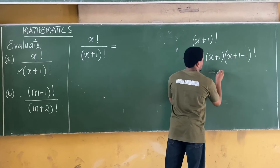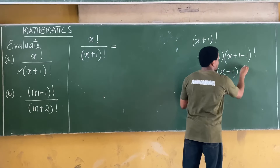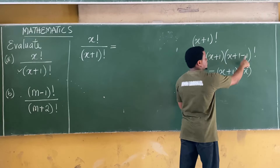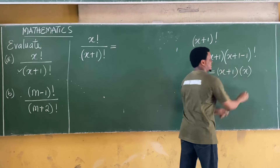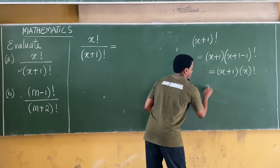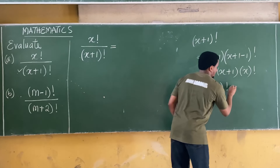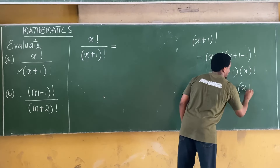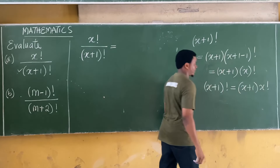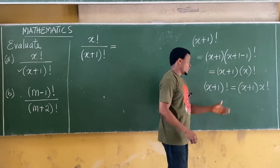Working this out: (x+1) × (x + 1 − 1)! = (x+1) × x!. So (x+1)! is the same as (x+1) × x!. These two expressions are equivalent.